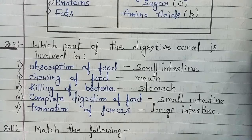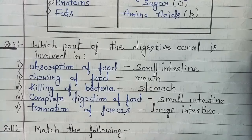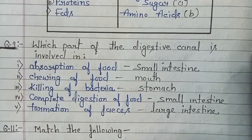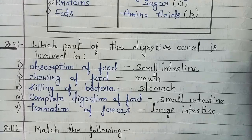Killing of bacteria takes place in the stomach, because hydrochloric acid is released there which kills the germs in our food. Complete digestion of food takes place in the small intestine. And formation of feces takes place in the large intestine.